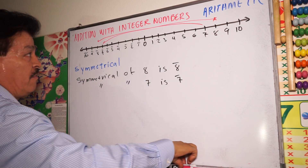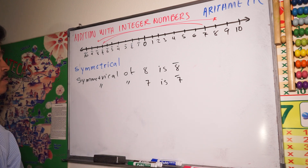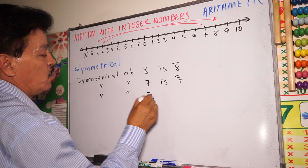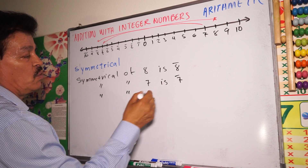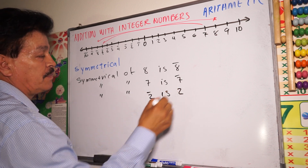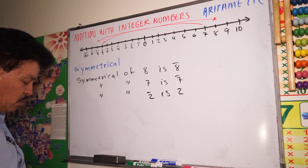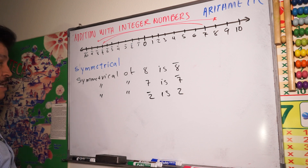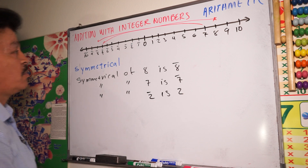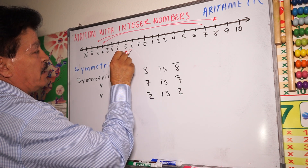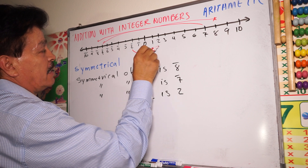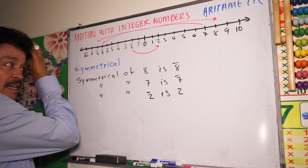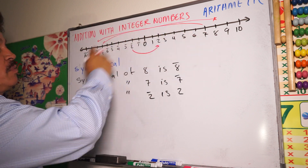What is the symmetrical of negative two? The symmetrical of negative two is two. When you add this number, the answer is zero. For example, you have negative two right here, and the symmetrical is two. That's the opposite number.